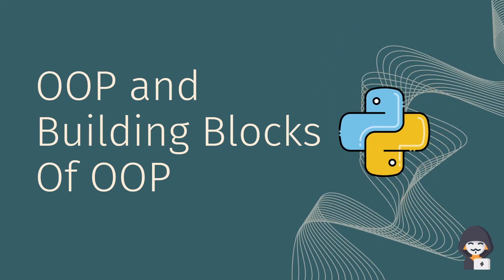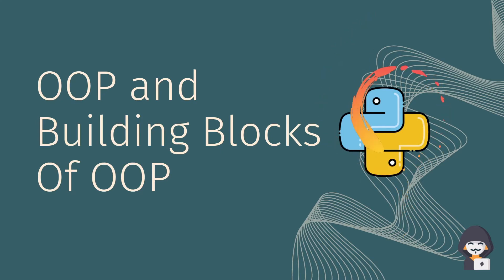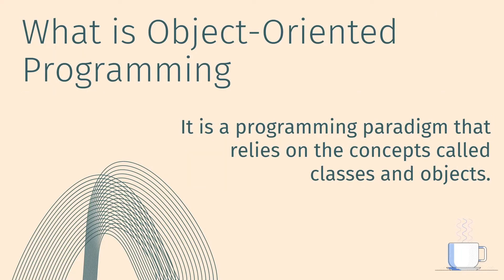In this video we are going to see object oriented programming and the building blocks of object oriented programming. Object oriented programming is a programming paradigm that relies on the concept of classes and objects. In the previous video we already saw what a paradigm is and its types. Any programming language that relies on classes and objects is called an object oriented programming language.